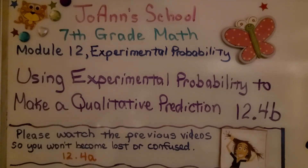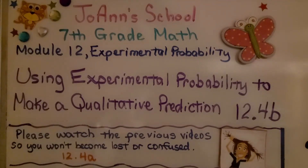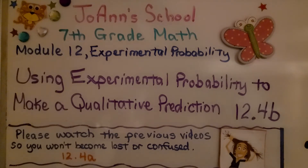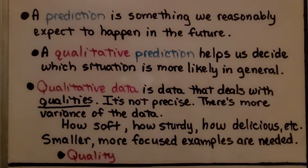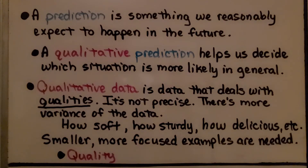Lesson 12.4b: Using Experimental Probability to Make a Qualitative Prediction. A prediction is something we reasonably expect to happen in the future. A qualitative prediction helps us decide which situation is more likely in general. Qualitative data is data that deals with qualities — it's not precise, and there's more variance in the data.